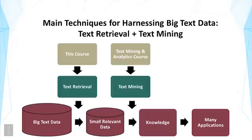In bioinformatics, there is a lot of data, particularly literature data. There's a great opportunity to use computer systems to analyze the data — to automatically read the literature, gain knowledge, and help biologists make discoveries. You can imagine many other applications. With so much text data, we can build very useful systems to help people in many different ways. The main technologies for building these systems and harnessing big text data are text retrieval and text data mining.